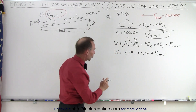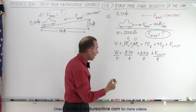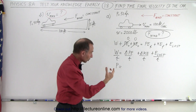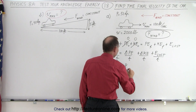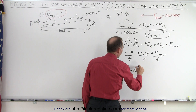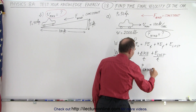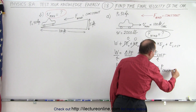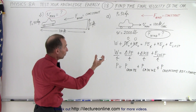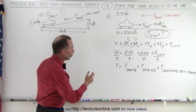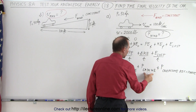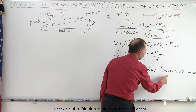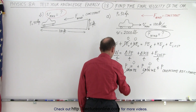If we divide both sides of the equation by time, work divided by time by definition is power. So the power put into the system equals the power required to gain potential energy, plus the power required to gain kinetic energy, plus the power required to overcome resistance. For the level road at maximum velocity: we're not climbing a hill so there's no potential energy gain, and we're at constant speed so there's no kinetic energy gain. Therefore the power put in equals the power to overcome resistance.